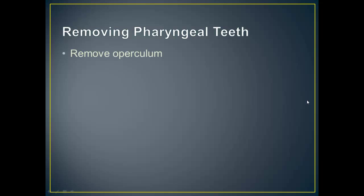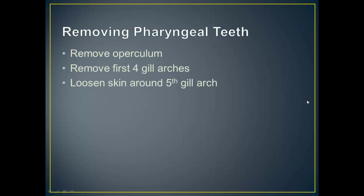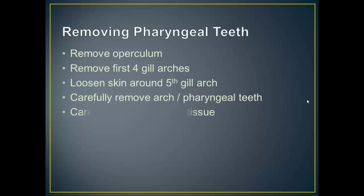To remove the pharyngeal teeth for observation under the microscope, the first step is to remove the operculum. Then remove each of the four gill arches. Next, loosen the skin around that fifth arch that contains the pharyngeal teeth, and then carefully remove that arch with the pharyngeal teeth. Finally, clean up all the soft tissue — be very careful here because you don't want to break any of those small teeth and get an incorrect count.